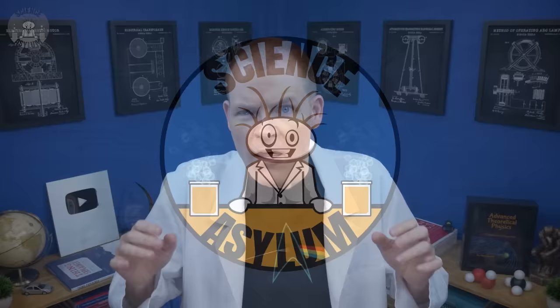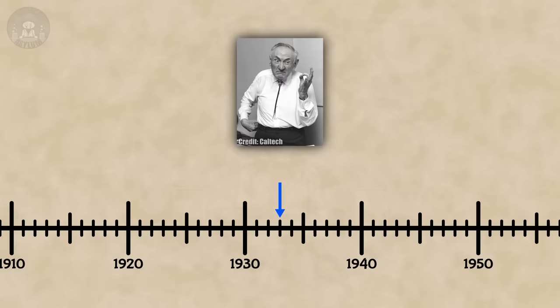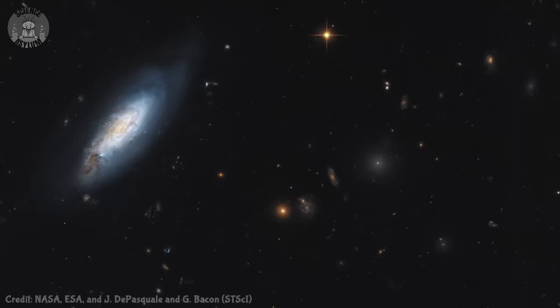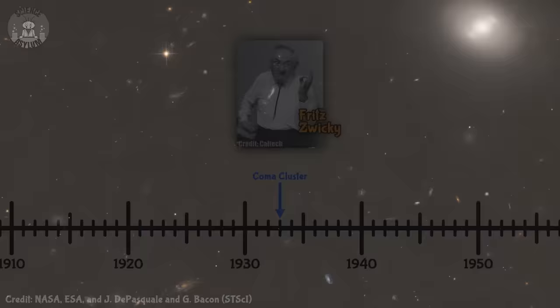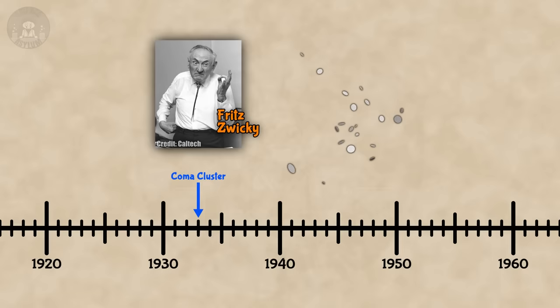The first hint of dark matter came to us all the way back in the 1930s. In 1933, Fritz Zwicky was studying a few galaxies in the Coma Cluster. That's a cluster of over a thousand galaxies about 330 million light years away. Zwicky discovered galaxies in the cluster were moving way too fast. They were moving so fast, there wasn't enough mass to hold the cluster together.